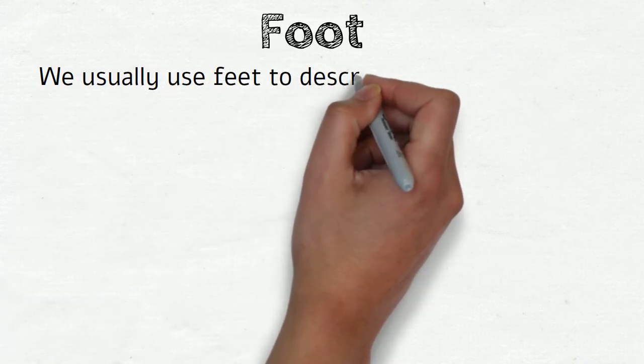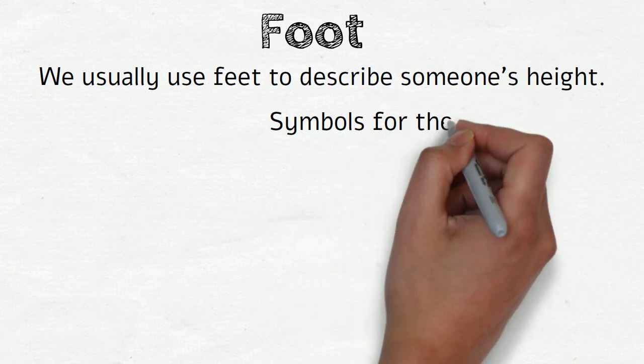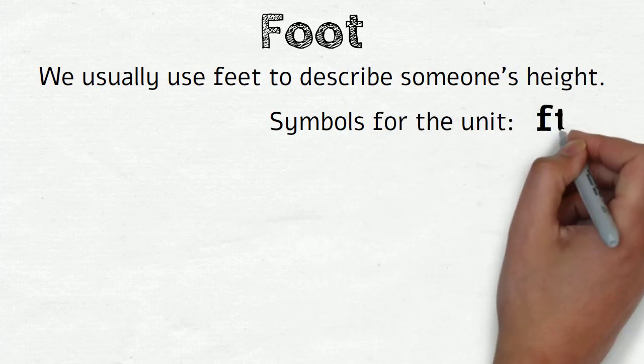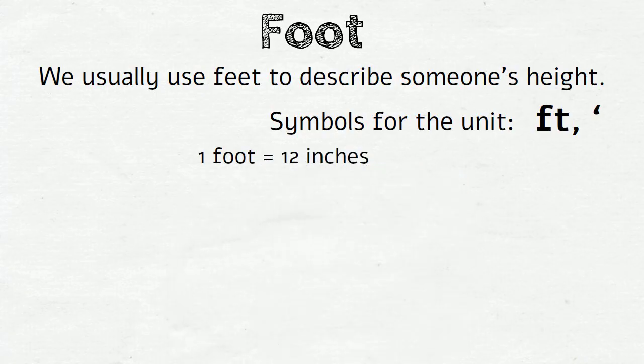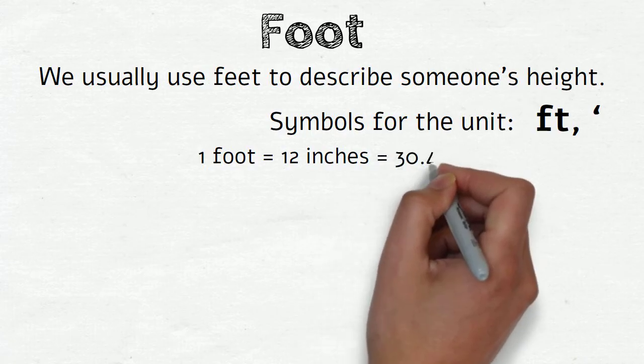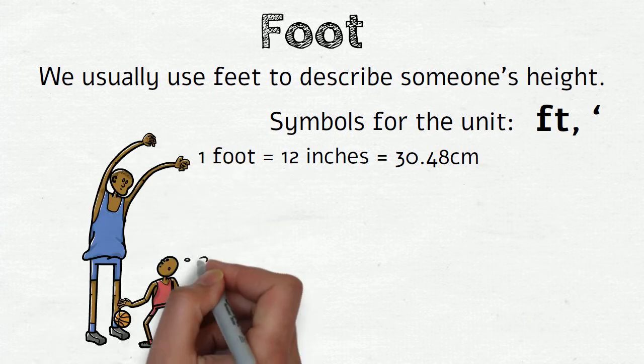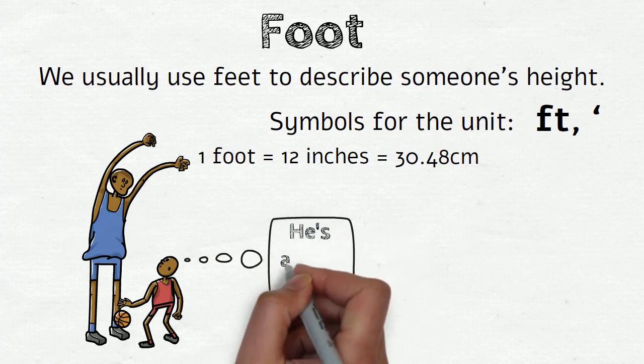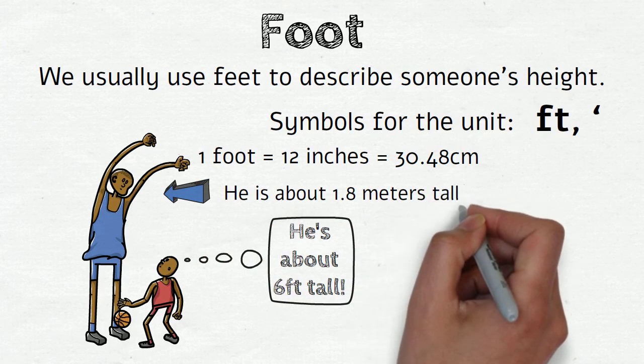Feet. We usually use feet to describe someone's height. The symbols for the unit are ft and apostrophe. And 1 foot equals 12 inches. It also equals 30.48 centimeters in a metric system. So if someone says 'He is about 6 foot tall,' it means that he is about 1.8 meters tall.